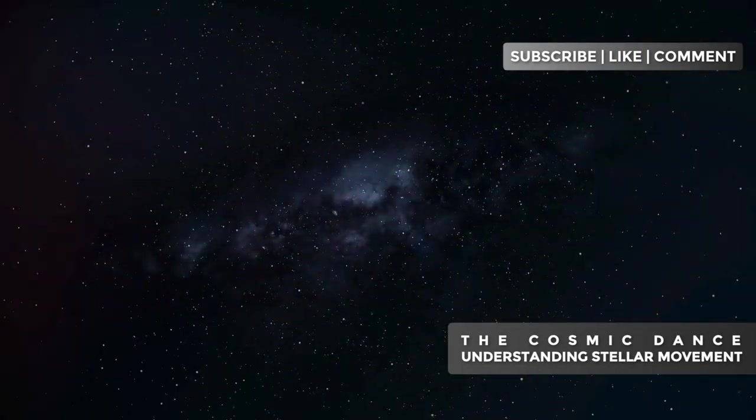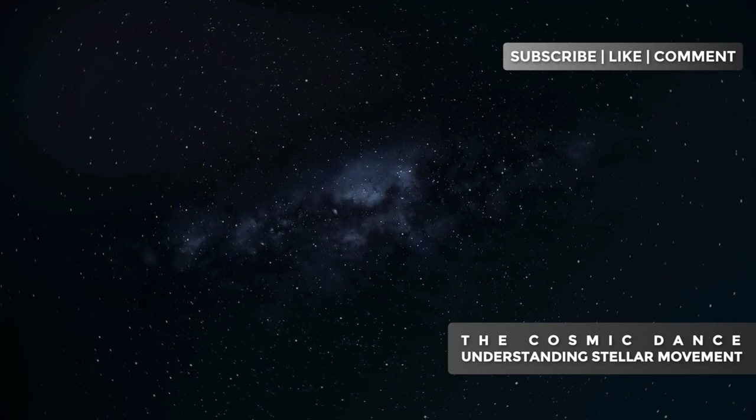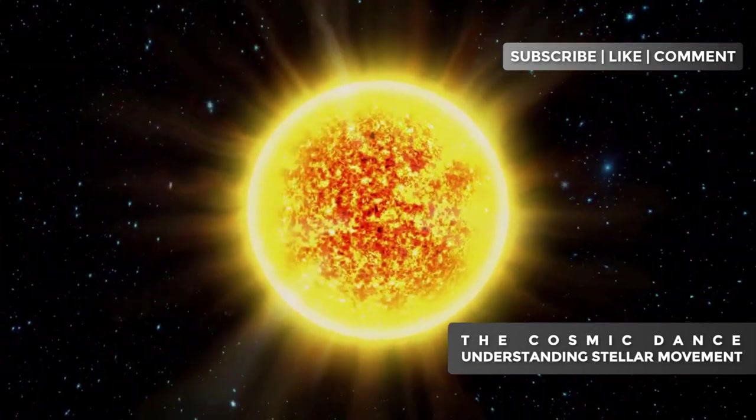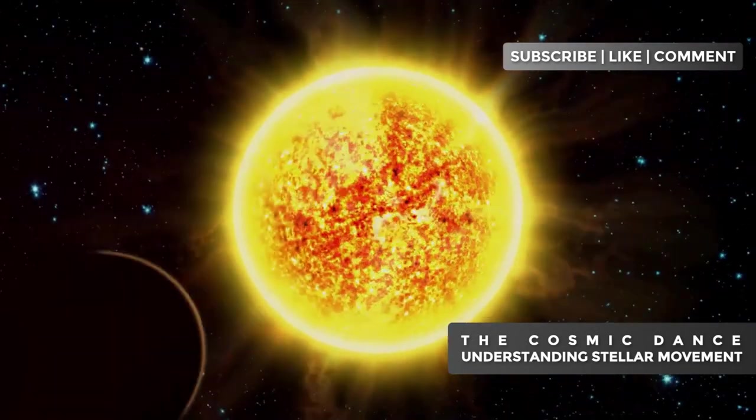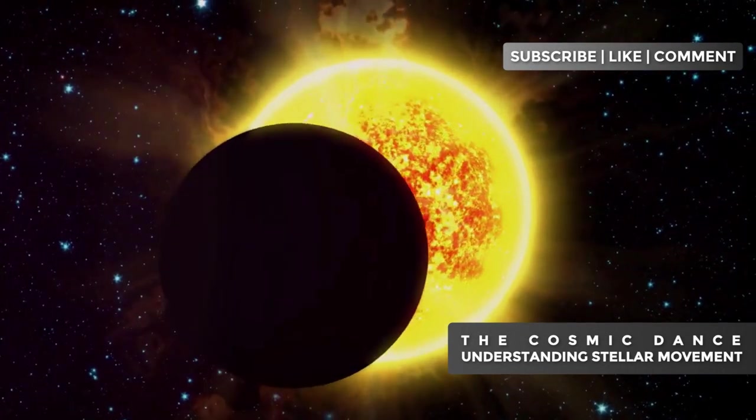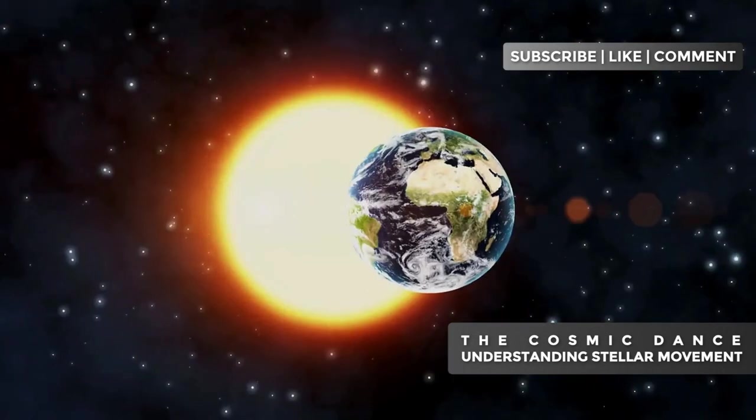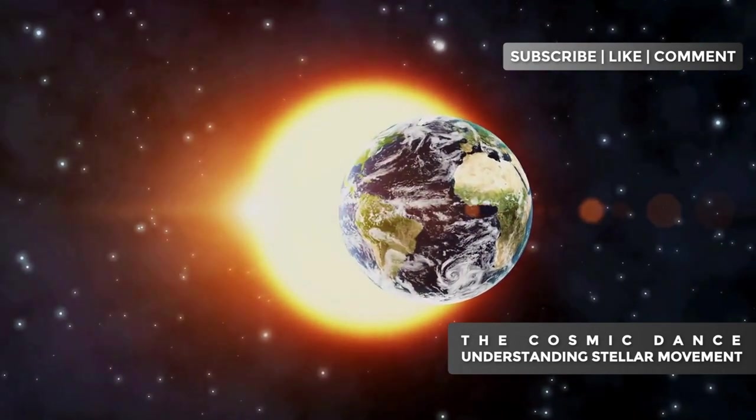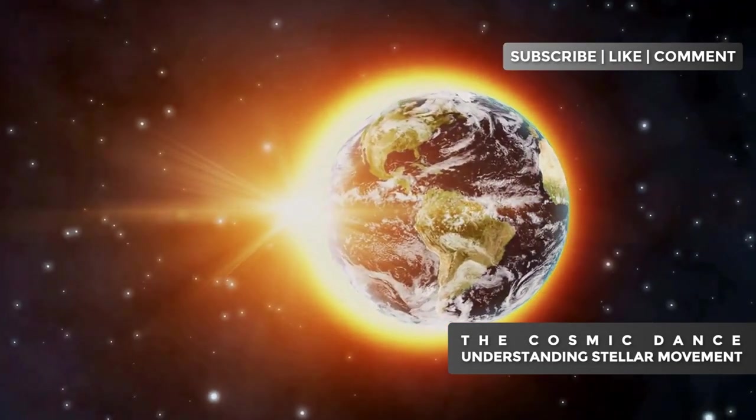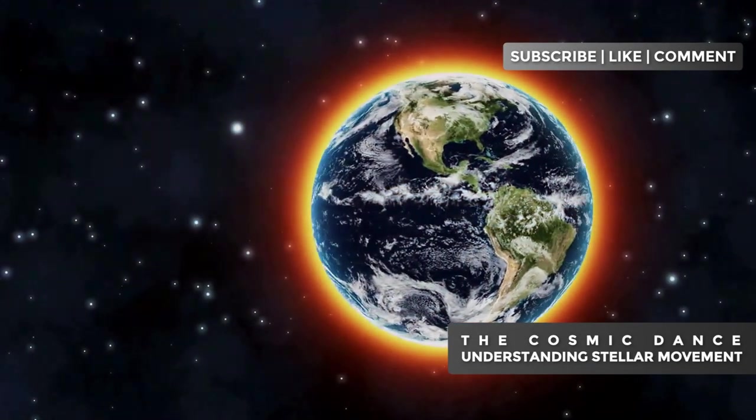The stars in our galaxy move at impressive speeds, although they may seem static to us. The sun, for example, travels at about 137 miles per second in its orbit around the galactic center. To put this in perspective, that's about 493,000 miles per hour, fast enough to circle the Earth in just three minutes.